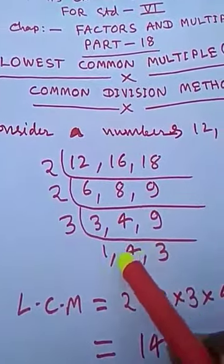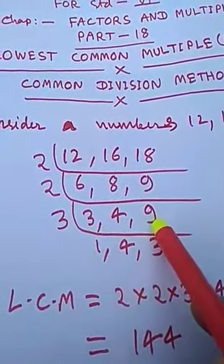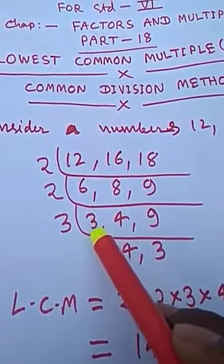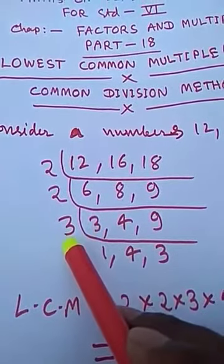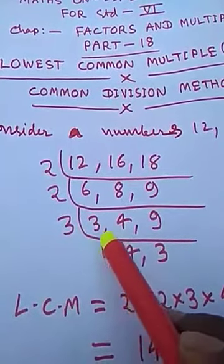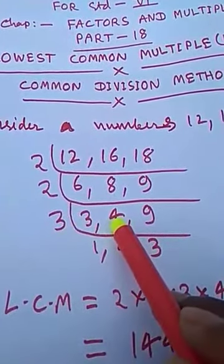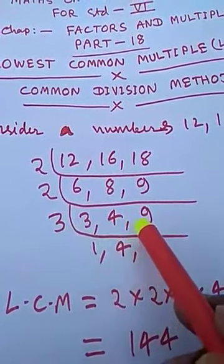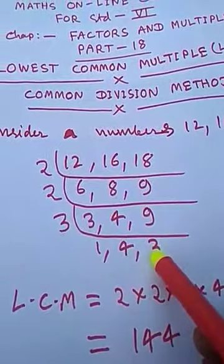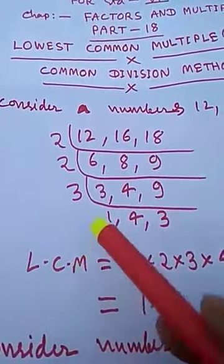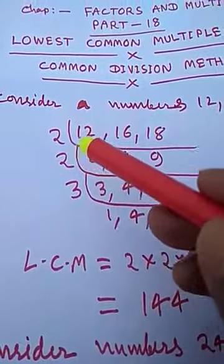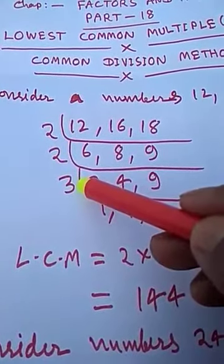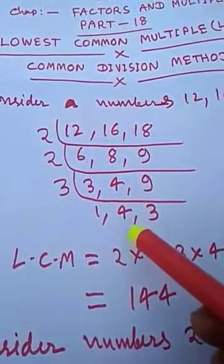Now we have 3, 4, and 9. Here, at least two of them will be divided by 3. So we divide by 3: 3 divides 3 once, 4 will not be divided by 3 so 4 comes down, and 3 divides 9 three times. Write 3. Now write the remaining numbers: 1, 4, 3.